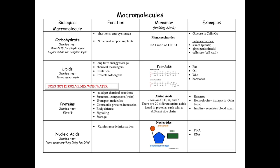Macromolecules are important to know for the AP Bio exam. There are four main types: carbohydrates, lipids, proteins, and nucleic acids. Carbohydrates have main functions of short-term energy storage and structural support in plants. Their monomer is a monosaccharide, found in a 1:2:1 ratio of carbon:hydrogen:oxygen. Example carbohydrates include glucose (C₆H₁₂O₆), and examples of polysaccharides include starch, glycogen, and cellulose.